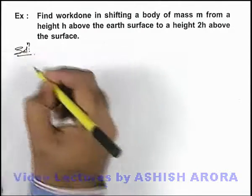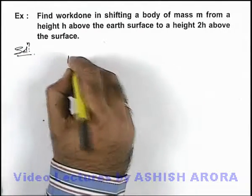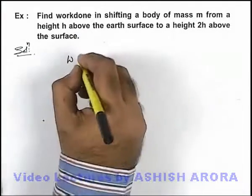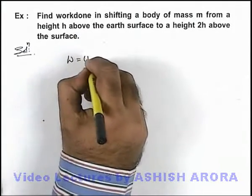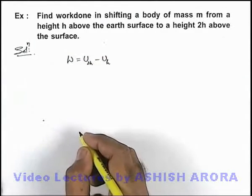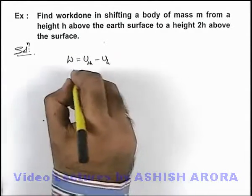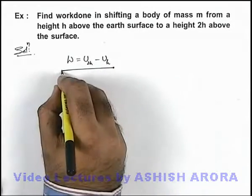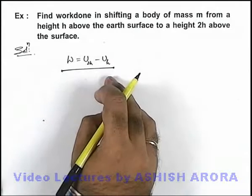So here we can directly write, if we wish to find out the work done in shifting a body from h to 2h, we can write this will be the potential energy at a position 2h minus potential energy when the body was at a position h. Always remember whenever we wish to find out work done in a force field which is conservative, it can be given by the difference in potential energy.